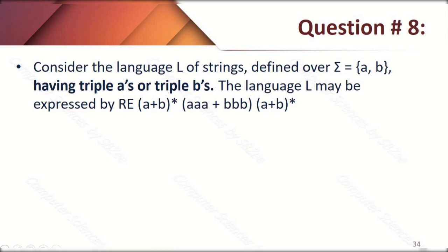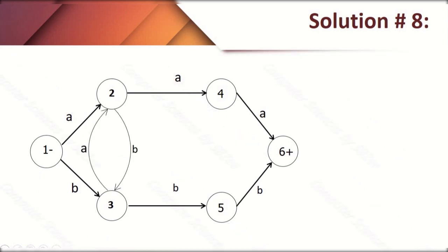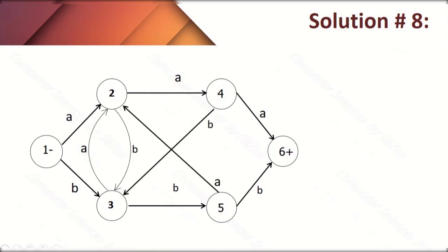Question number eight: consider the language L of strings defined over sigma {a, b} having triple A's or triple B's. The regular expression for this question includes triple A's and triple B's. The machine has three A-transitions and three B-transitions. We then make this machine deterministic by completing the missing transitions for states 2 and 3, then states 4 and 5, and finally state 6. This is the required FA for triple A's and triple B's.